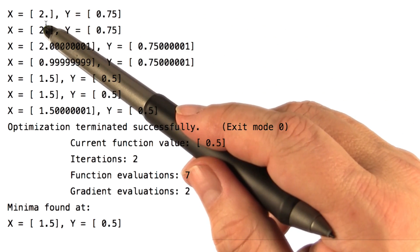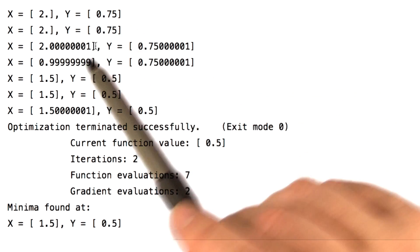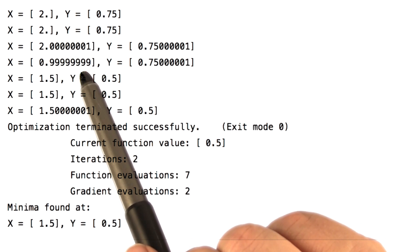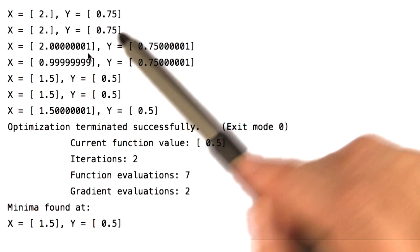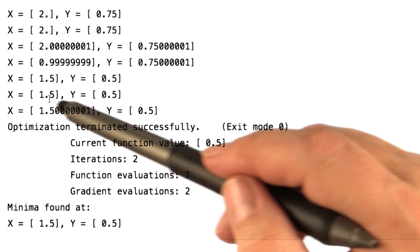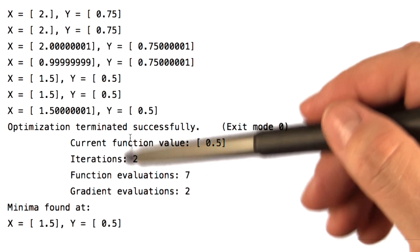So it gets called initially with an x of 2, and it discovers that the value is 0.75. Then a value slightly greater than 2, a value slightly less than 2. And the minimizer very quickly converges on 1.5 as the answer. And here it prints out those values.